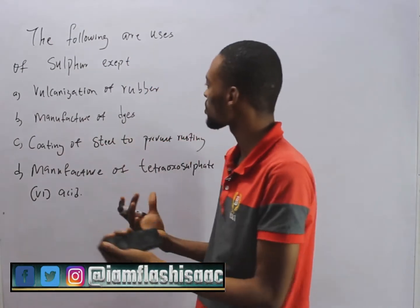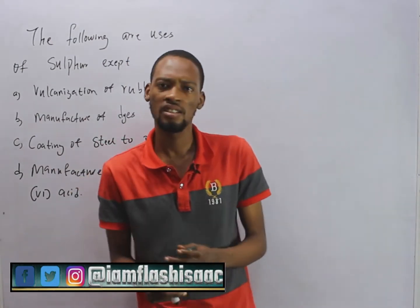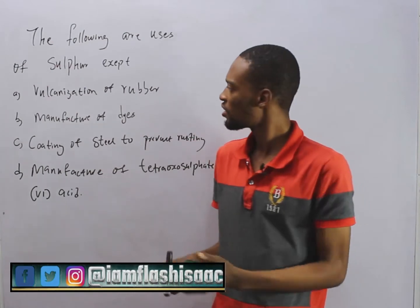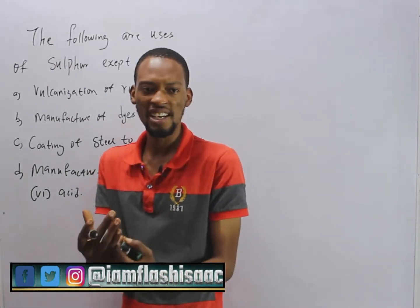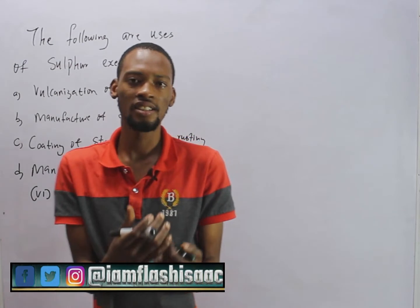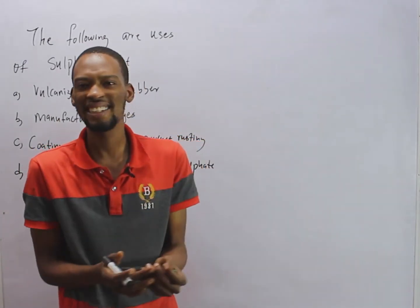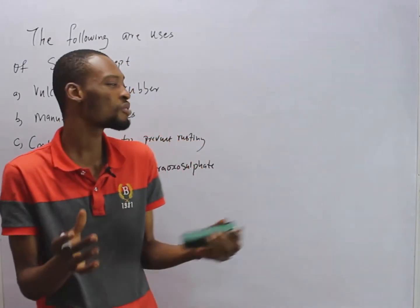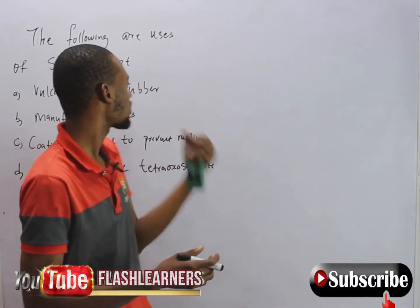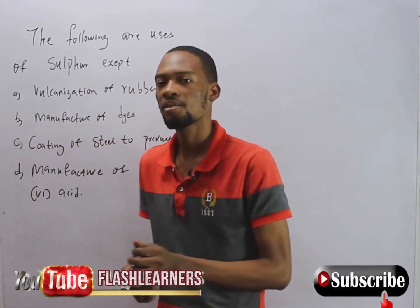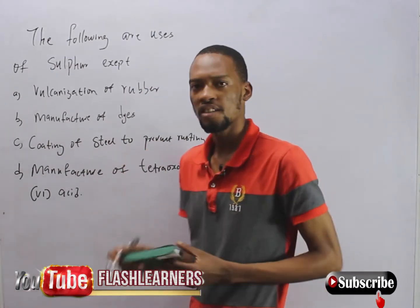The first one says: vulcanization of rubber. Yes, this is a popular use of sulfur. It involves heating sulfur with rubber to increase the tensile strength, the hardness — to improve all the physical properties. That is vulcanization of rubber; yes, sulfur is used for that.